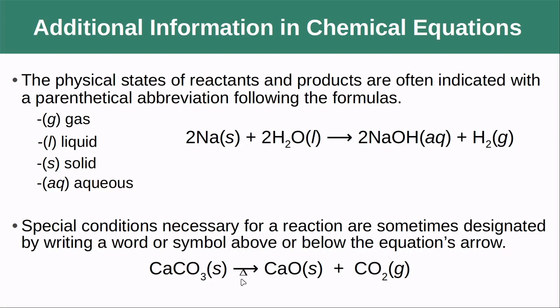Some special conditions can also be included, and they're usually designated either above or below the arrow here. For instance, this little delta right here means that you heated it. So you took the calcium carbonate and you heated it to get it to become calcium oxide and CO2. A little extra note here is that these are actually italics. So if you are writing, typing them out, you should italicize these here.